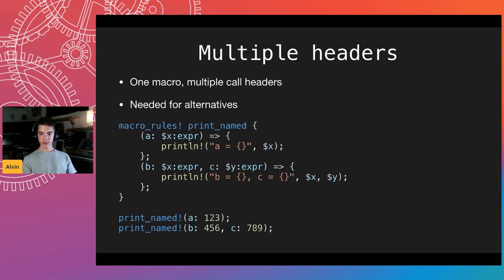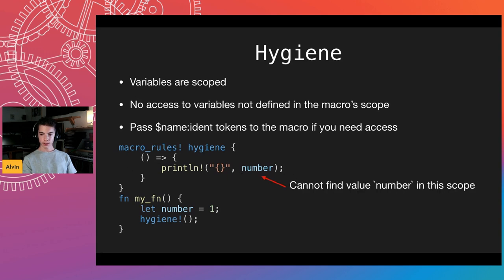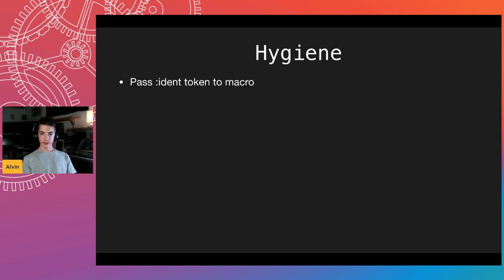Another problem C macros have is so-called hygiene. If you pass something to the macro that has the same name as a variable defined inside the macro, you'll override it and lose access to it. But in Rust we don't have this problem — variables are scoped. We can solve it by passing an identifier token, or by defining the macro in the scope of the variable — for example, defining it after the variable has been declared, so it correctly accesses the variable.